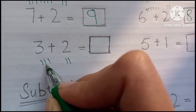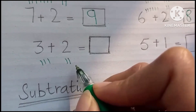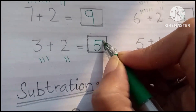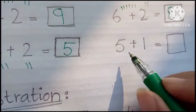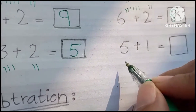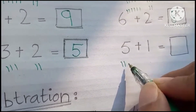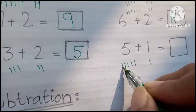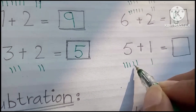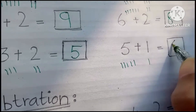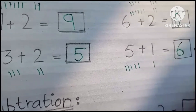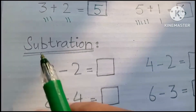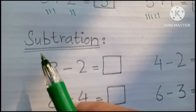1, 2, 3, 4, 5. 3 plus 2 is 5. 5 plus 1: 1, 2, 3, 4, 5, 6. 5 plus 1 is 6. Okay, now this is the subtraction.